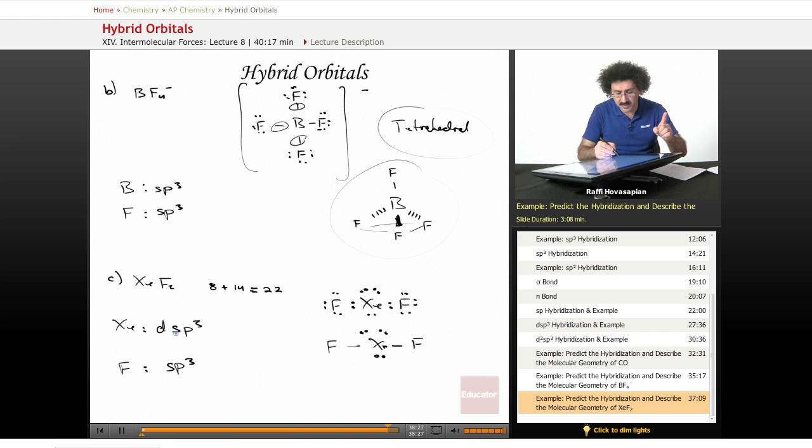One of the DSP3, let's look at this bond over here. A DSP3 hybrid orbital on xenon is interacting with an SP3 orbital on fluorine to form a sigma bond. That's this single sigma bond.